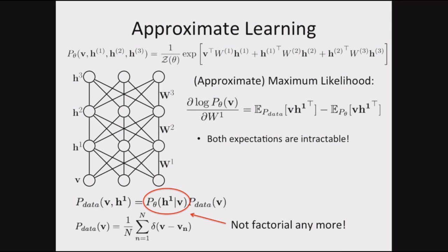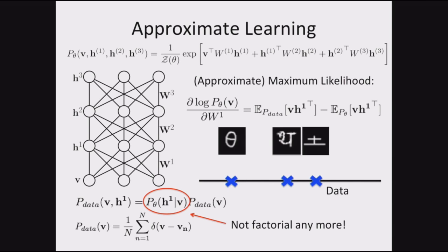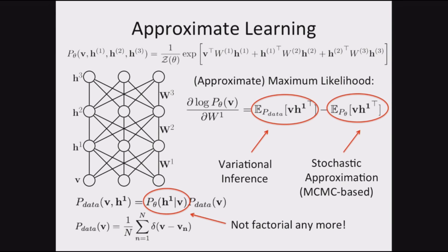The first term is easy to compute because of the particular model structure. The second term — requiring summing over all possible configurations, all possible images — is intractable. What a lot of algorithms do is use Monte Carlo sampling or variational inference. Intuitively, the first term is putting probability mass where you see the data: these are real characters, put probability mass around them. The second term looks at the entire exponential space and says everything else is not real. You can use variational inference or stochastic approximation to train these models.